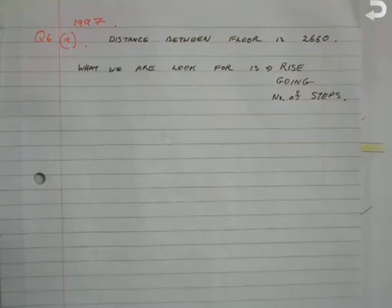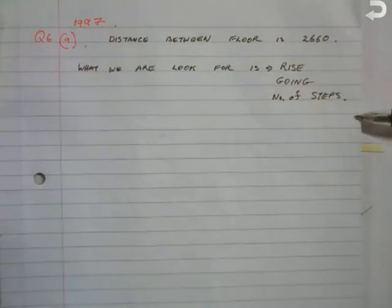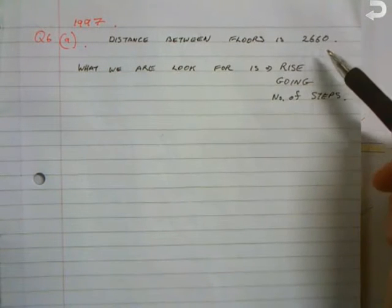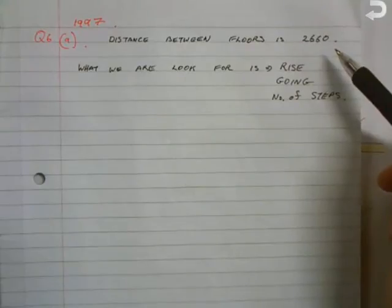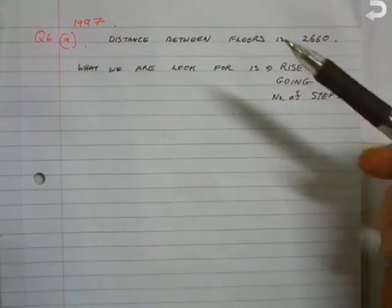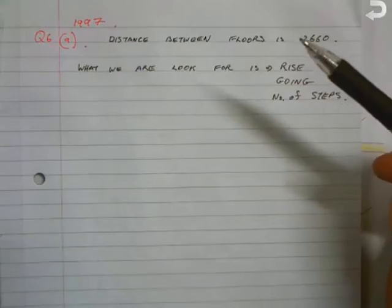Now in this question regarding stairs, what you're looking for is the rise, the going, and the number of steps. What you're told in the question is the distance between the floors is 2660. That's the distance from your ground floor to your first floor.